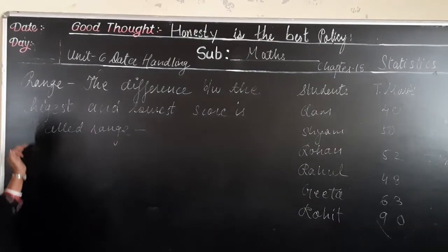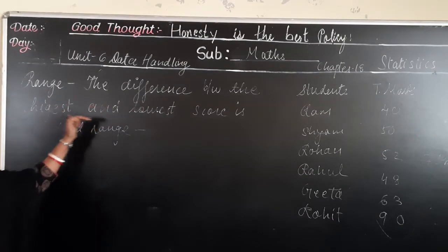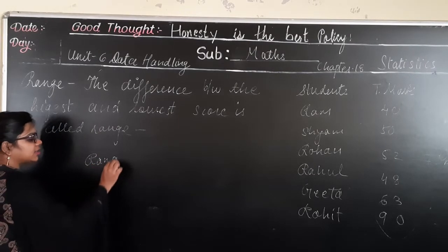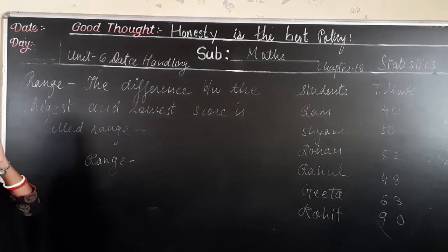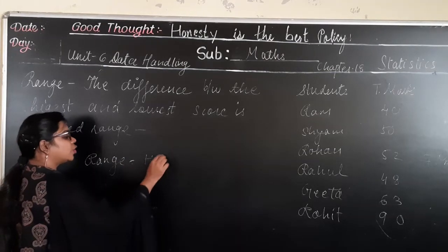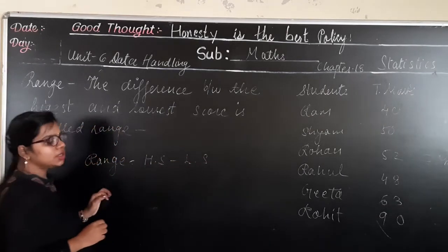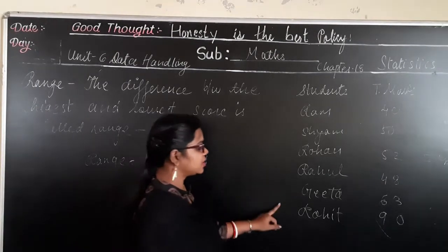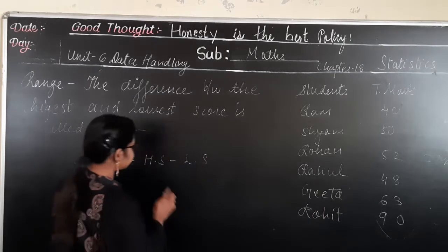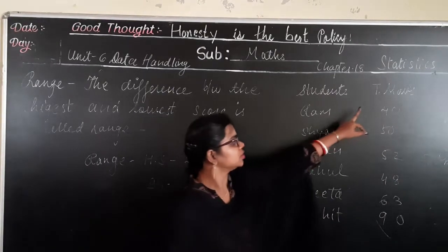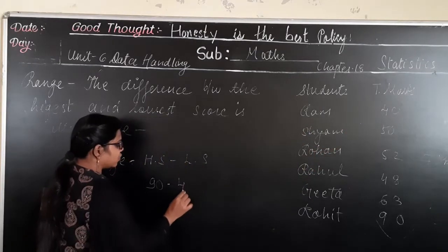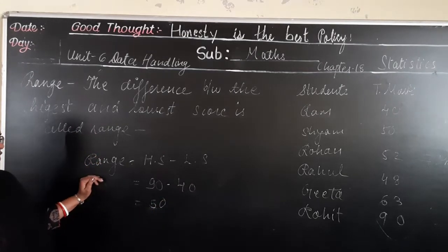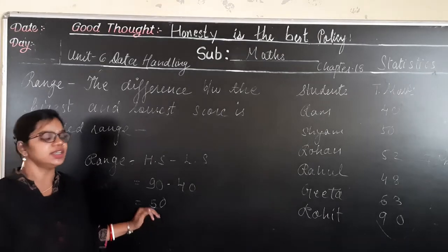The next topic is range. The range is the difference between the lowest and the highest score. So: range = highest score minus lowest score. From the above data, the highest score is 90 and the lowest score is 40. So 90 minus 40 equals 50. Therefore, the range of this particular data is 50.